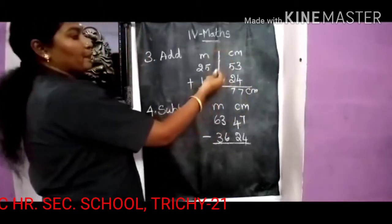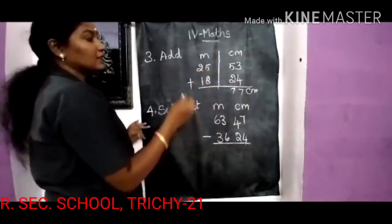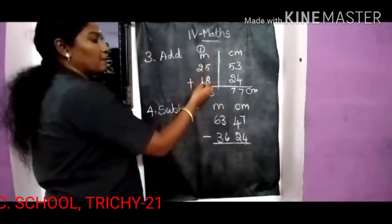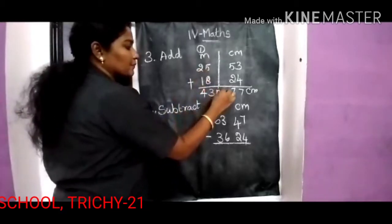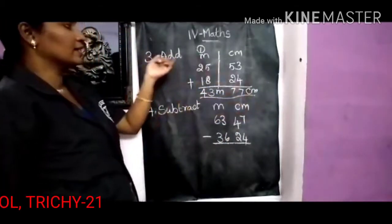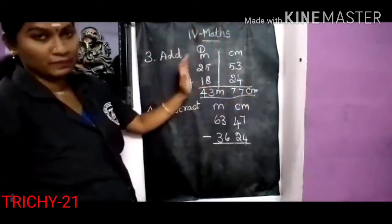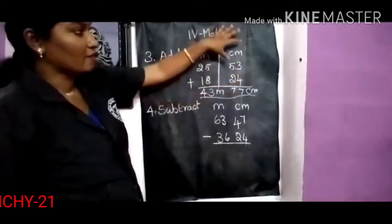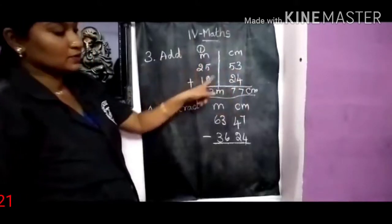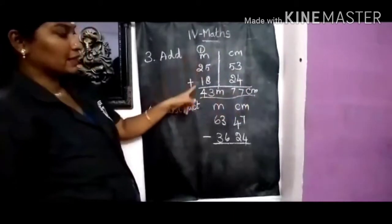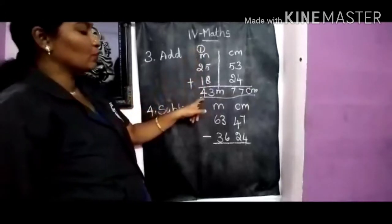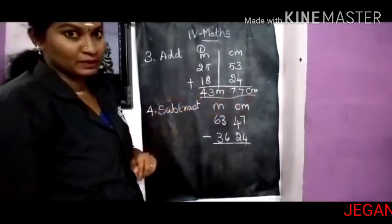So the final answer is 43 meter 77 centimeter. For Roman numeral 3 addition: write the measurements separately — meter side and centimeter side. Start from the centimeter side: 3 plus 4 is 7, 5 plus 2 is 7, so 77 centimeter. Meter side: 5 plus 8 is 13, write 3 carry 1, then 1 plus 2 is 3, and 3 plus 1 is 4. Total: 43 meter 77 centimeter.